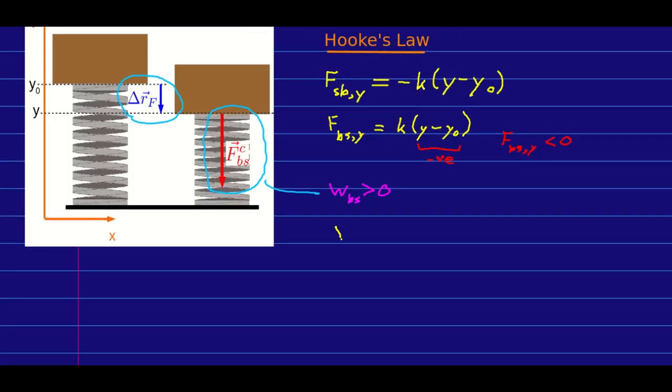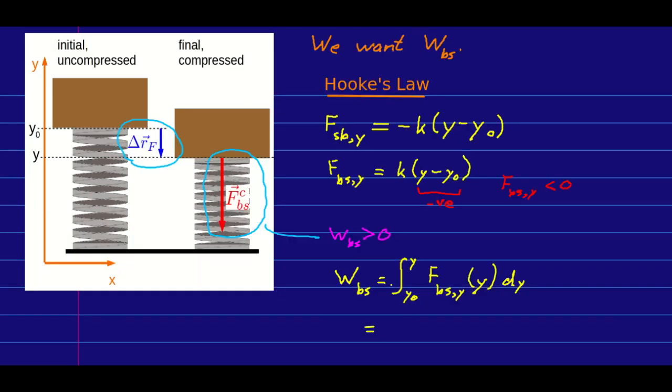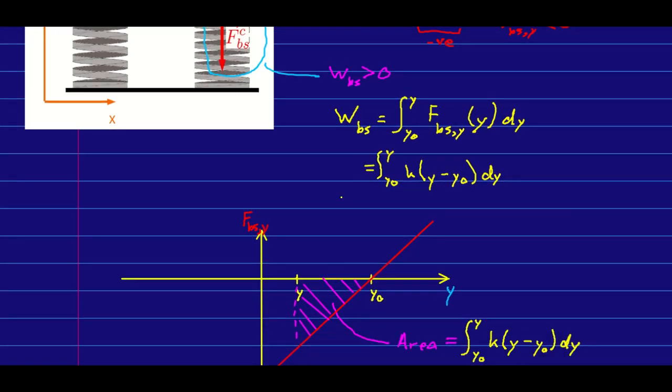What we now can do is use our definition that we have. The work that the brick does on the spring is going to be the integral from y₀ to y of the force that the brick exerts on the spring as a function of y, dy. Continuing to write out this integral and using our expression for the force, this is the integral of k(y - y₀) with respect to y. This is one of these integrals that you can evaluate without knowing any calculus, because it's just the area under a curve.